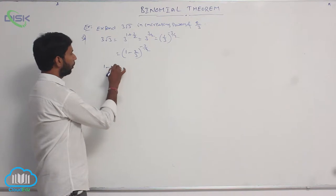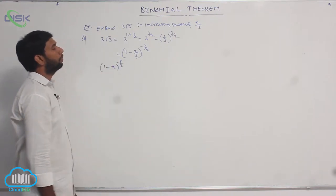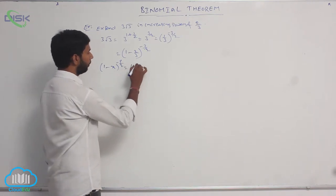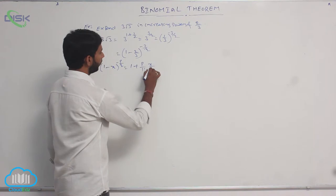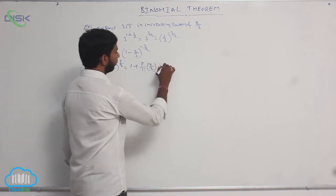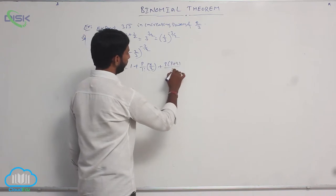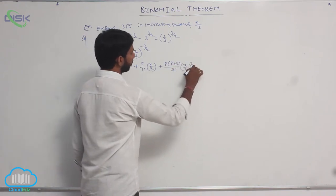This is of the form (1 - x) whole power p/q. The expansion formula is: 1 plus p/(1 factorial) times (x/q) plus p times (p + q)/(2 factorial) times (x/q) whole squared plus and so on.